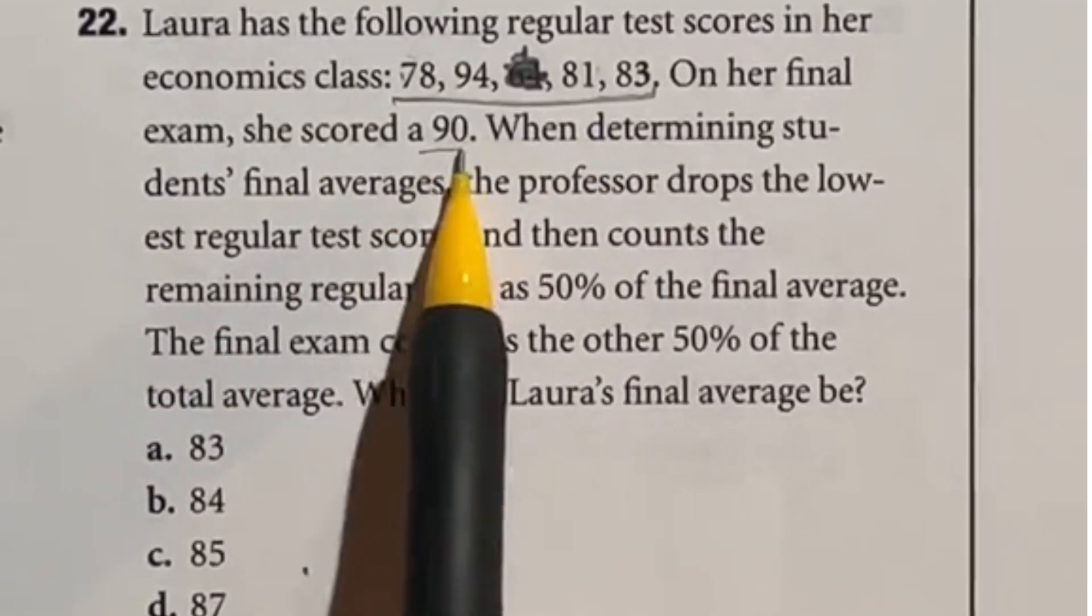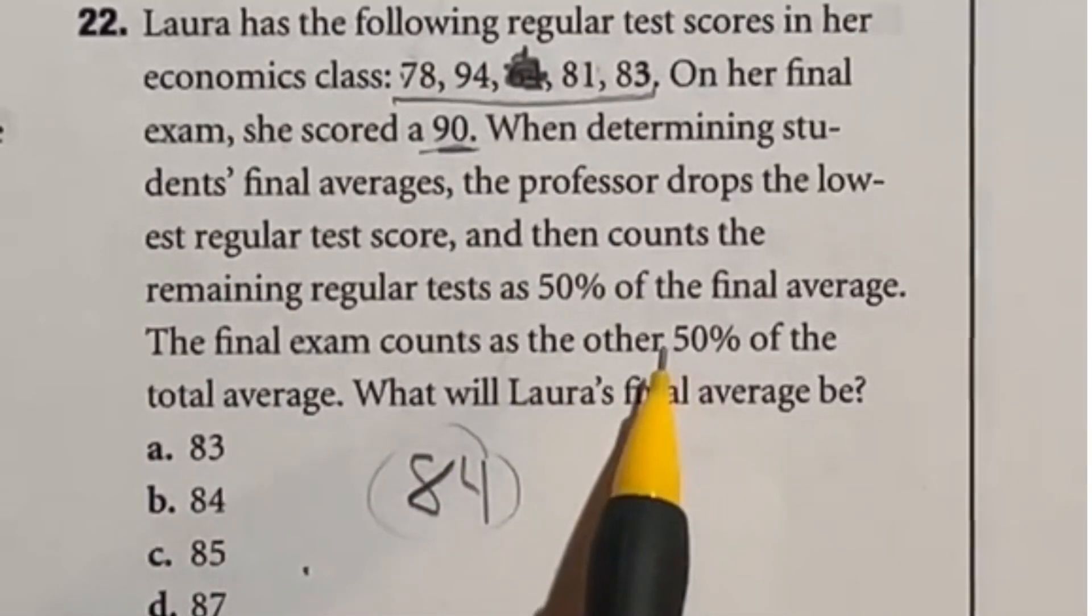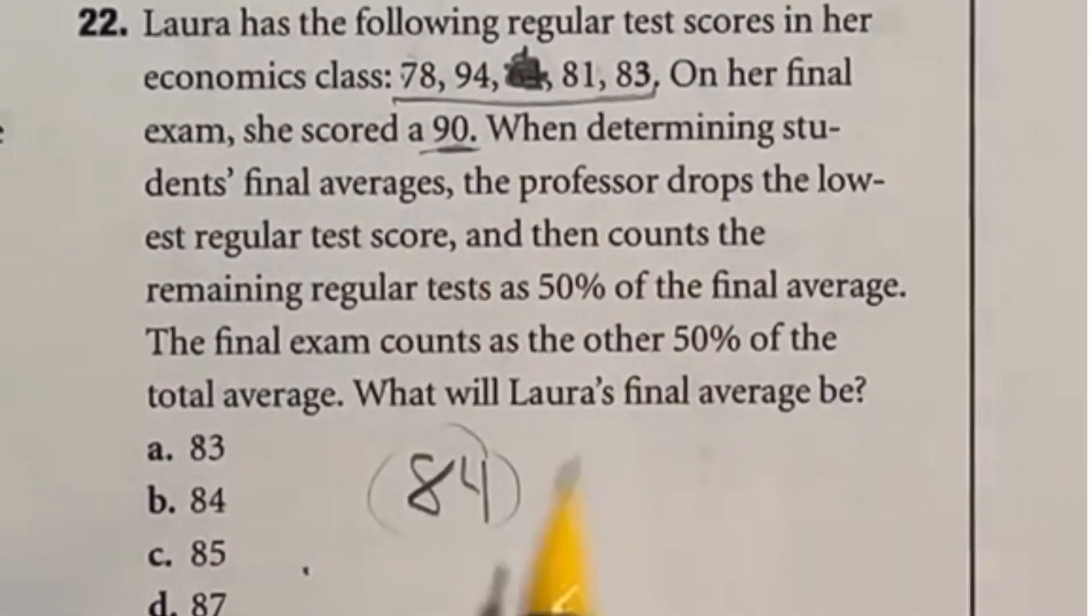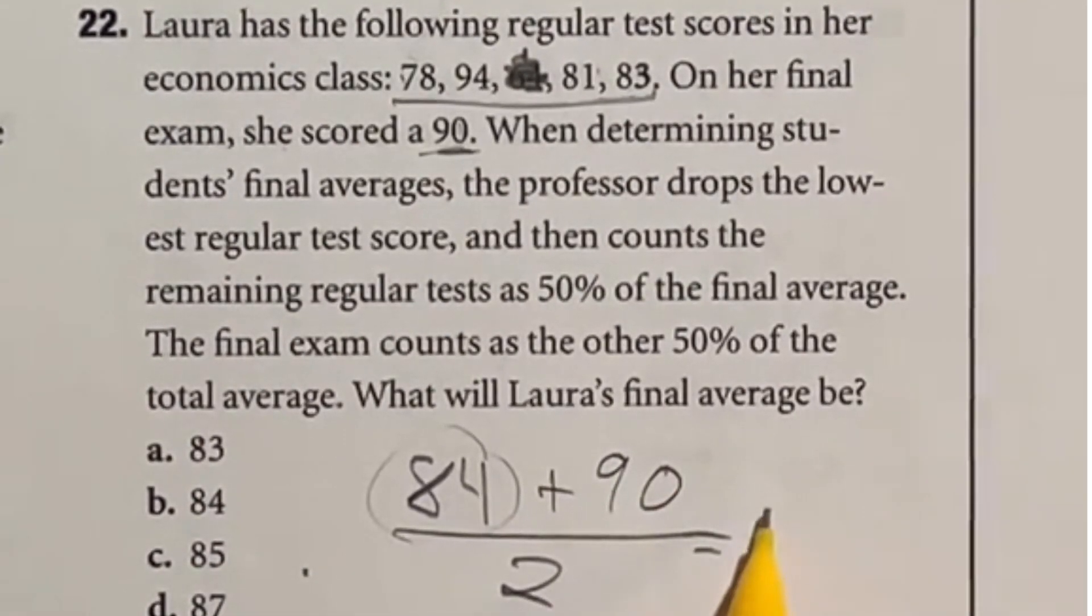Well the final exam she got a 90 and it says here that the final grade is 50 percent is this average right here and the other 50 percent comes from that final. So that means that we're essentially finding the average of these two numbers 90 and the 84. So if I do 84 plus that 90 and then divide by two we should get our final answer which is 87. Answer D.